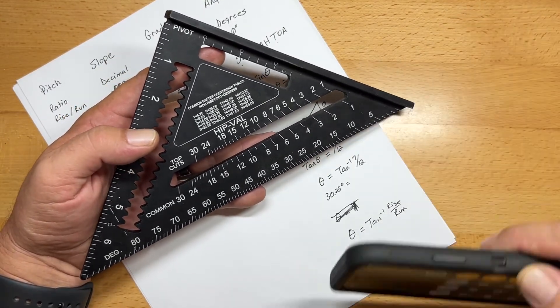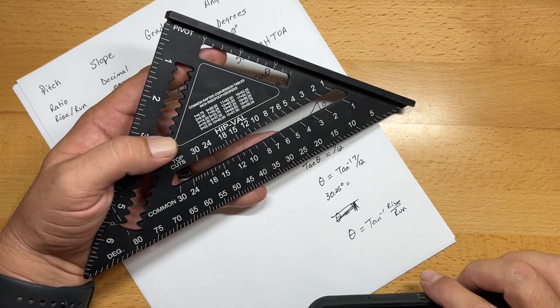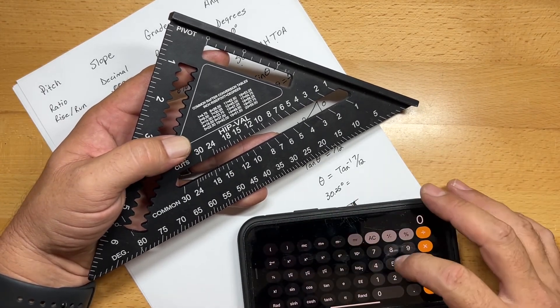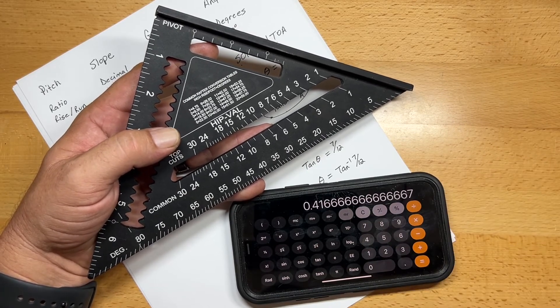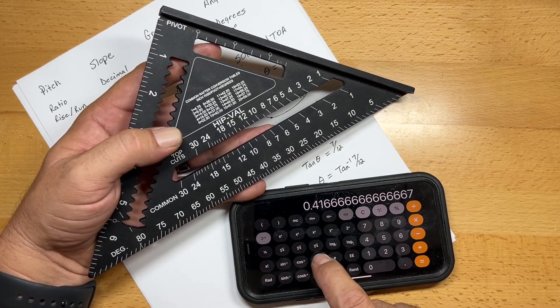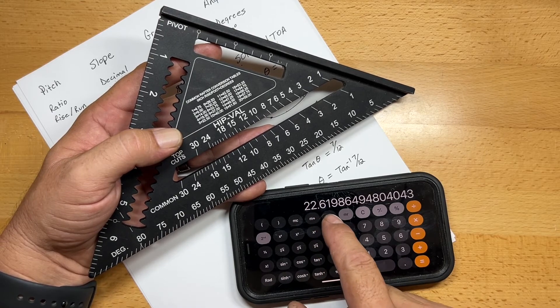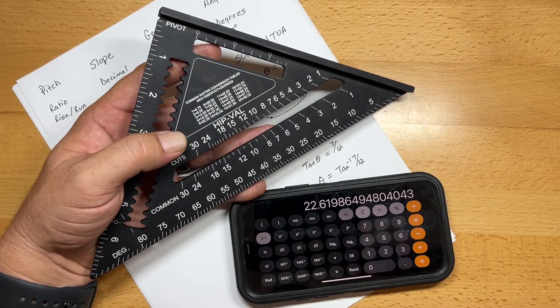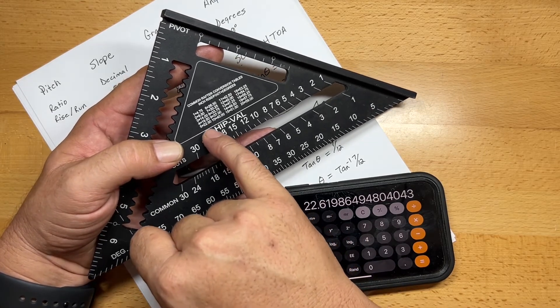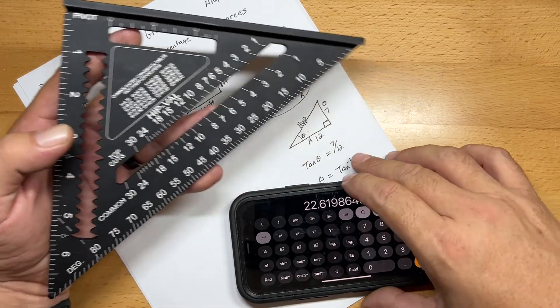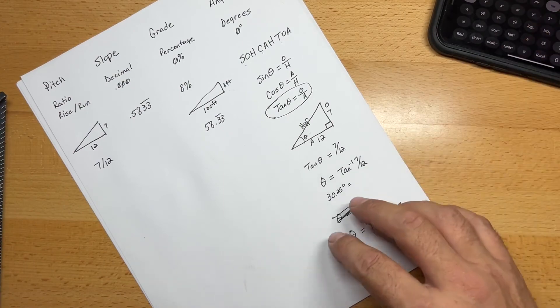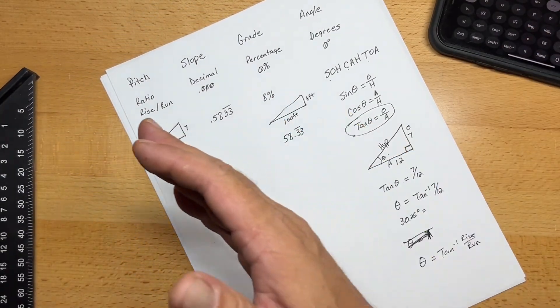So let's do 5 over 12. So if we do 5 divided by 12, which is our pitch, and then we hit 2nd, and then we do arc tangent, you'll see that it's 22.619 degrees. And here on the rafter square, it's listed as 22.50 degrees. So this is just a basic rundown of how you get from pitch to angle.